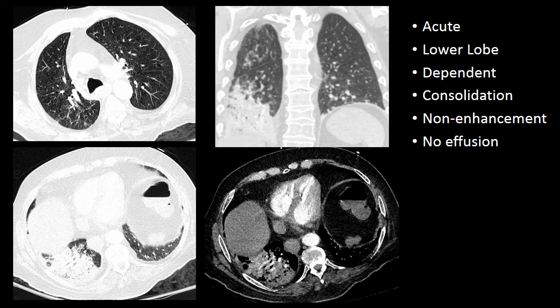When we look at the CT in this same patient, we can confirm it really is a lower lobe predominant process. There may be a little abnormality in the upper lobe, but we can see very dense airspace filling or consolidation in the lower lobes. This dependent, dense airspace consolidation with lower lobe predominance ends up being aspiration, which is more commonly seen in the lower lobes or in the dependent portions of the lungs.